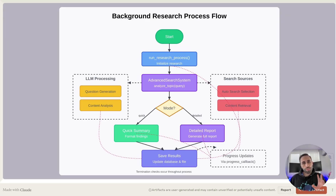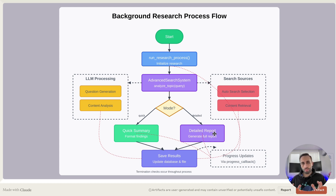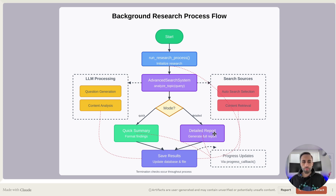There are two modes available in this deep research application. One is quick summary and the second is detail-oriented. With quick summary you get a short, concise report, but with the detailed one you get the most prolonged and detail-oriented research paper out of your query.